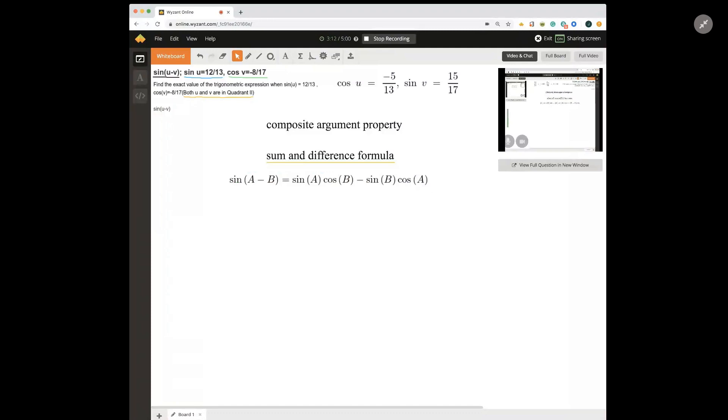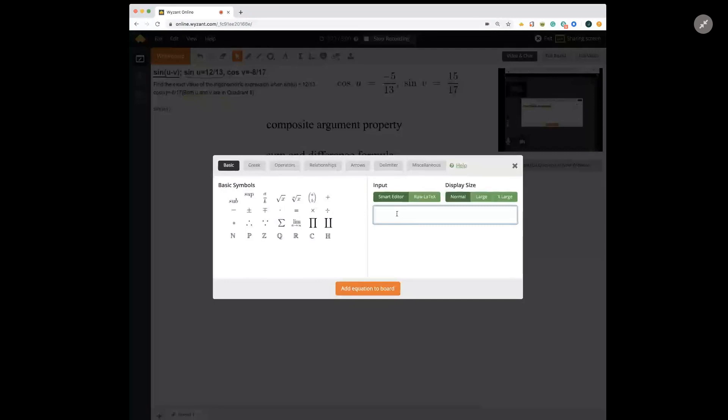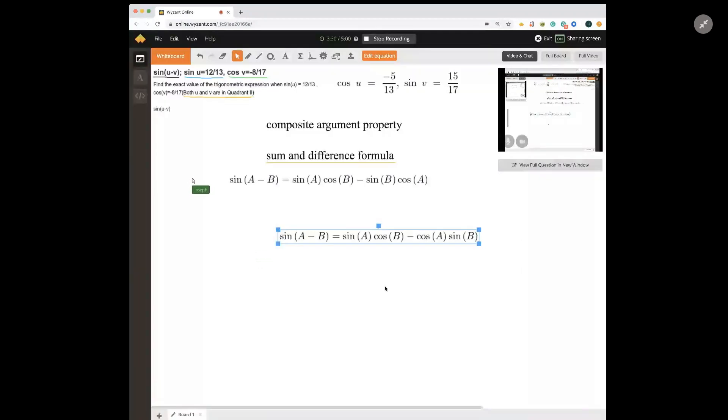And so depending on your teacher, in fact, you might see this formula written slightly differently. Not only might they not use a and b, but they might rearrange the factors in the second term. And so your teacher could just as easily say this is the property and they would not be wrong.